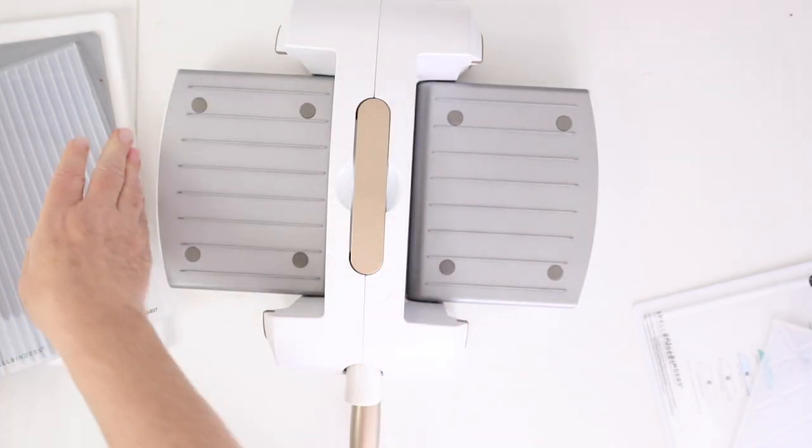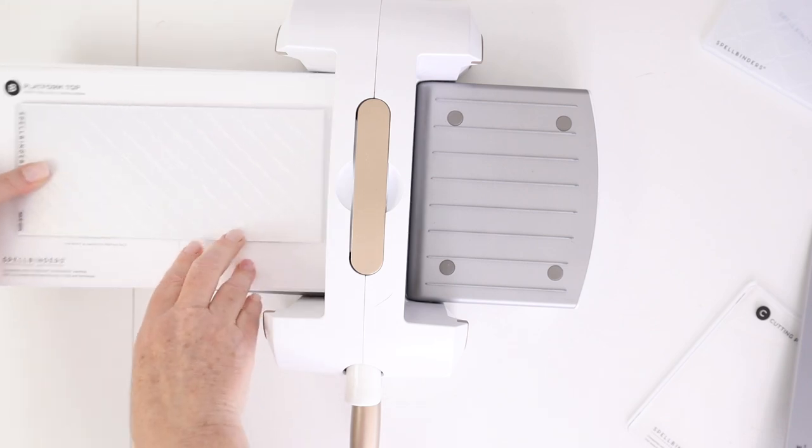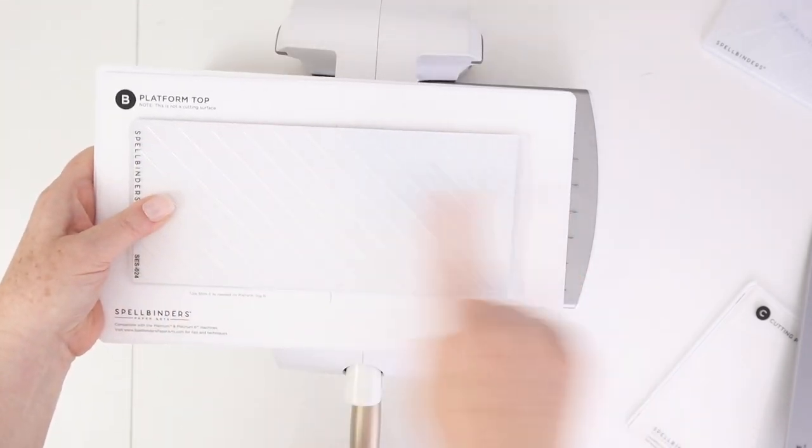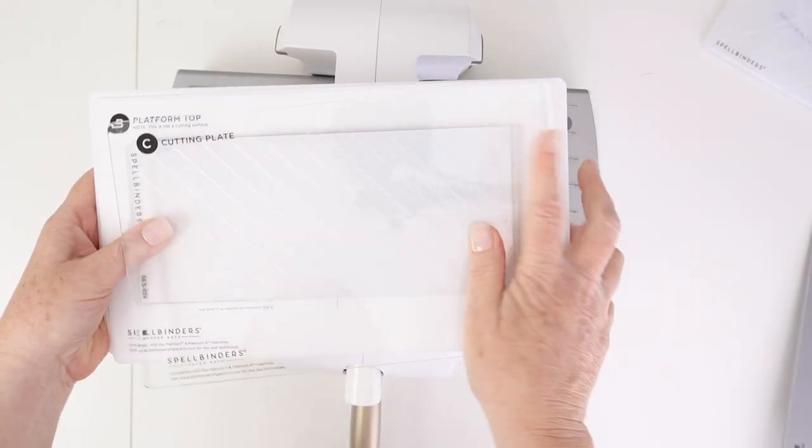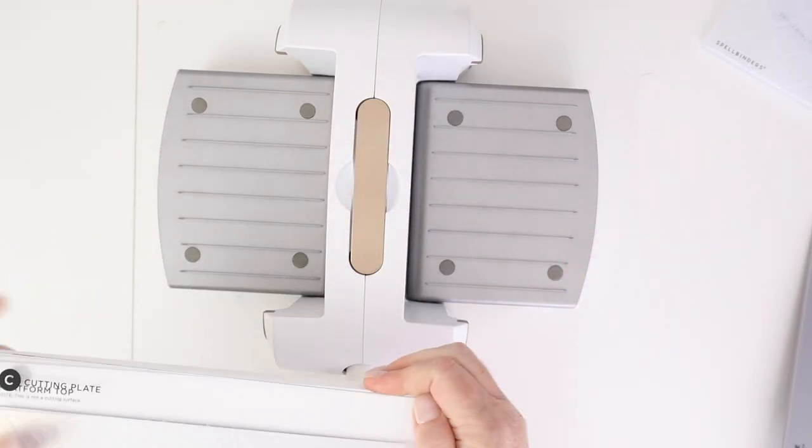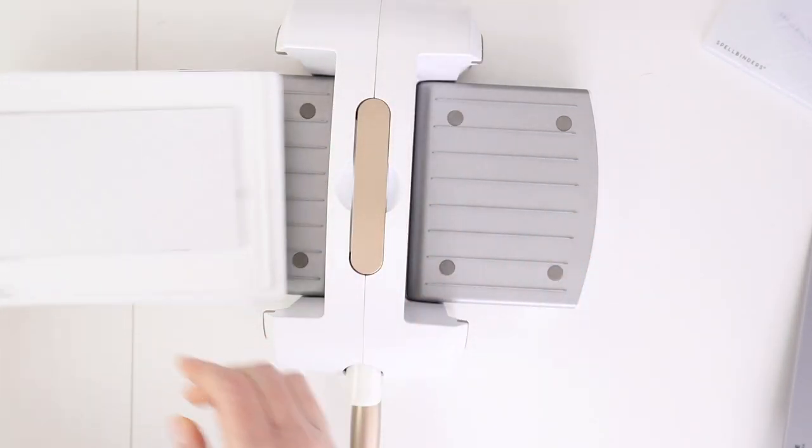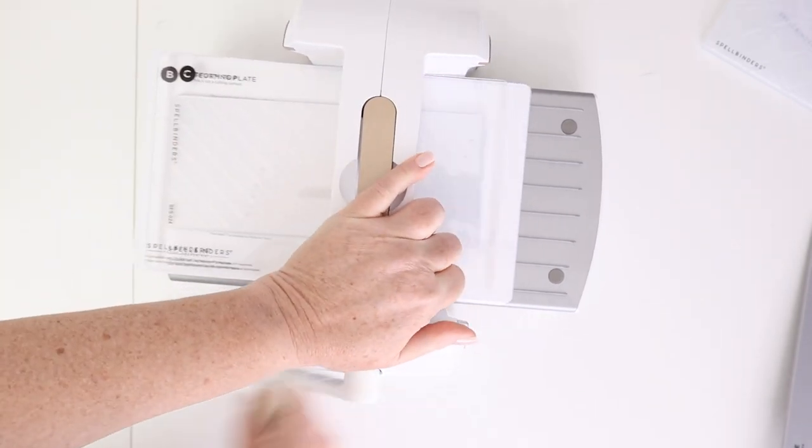Here is a slimline embossing folder from Spellbinders. So I just wanted to share how those extended plates work. You can see that it's not hanging off either side and the cutting plate is perfect. So this is the universal plate system with the extended 2D embossing folder.